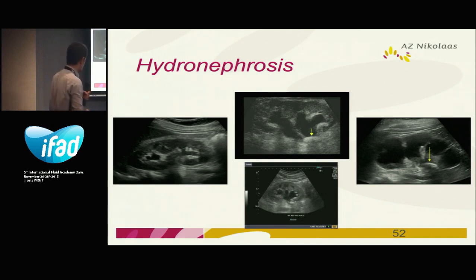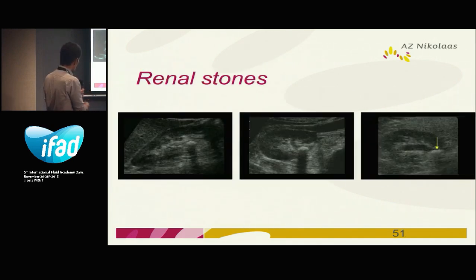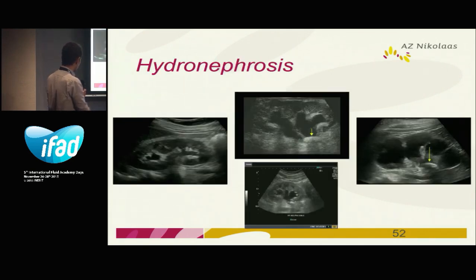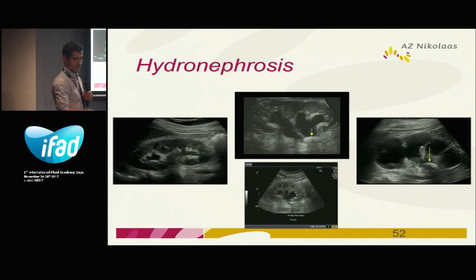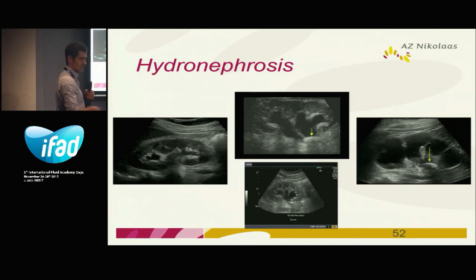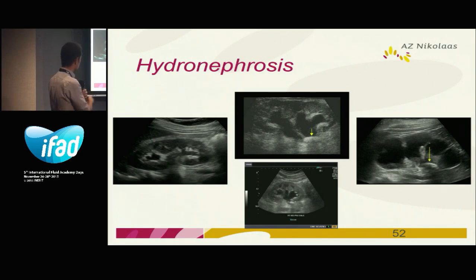Looking at dilatation — very easy. You look at the kidney: here is the parenchyma and the sinus renalis. If there is dilatation, you will see it in the sinus renalis. This is grade 1, grade 2, and this is grade 4 dilatation. Sometimes you need to differentiate veins or arteries from the collecting system — put your color Doppler on it and you will see whether it's veins, arteries, or the pelvicalyceal system that's dilated.